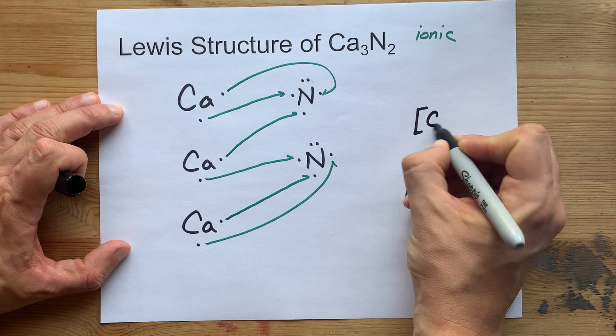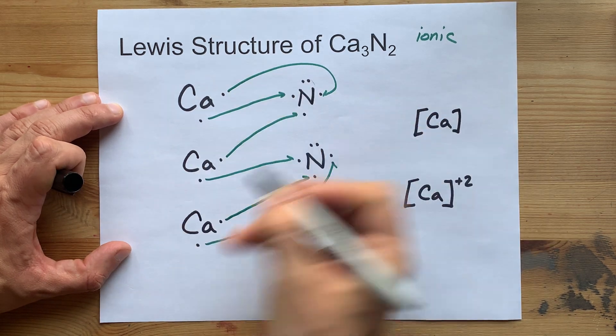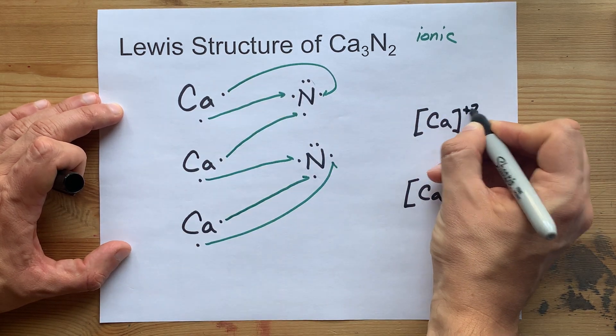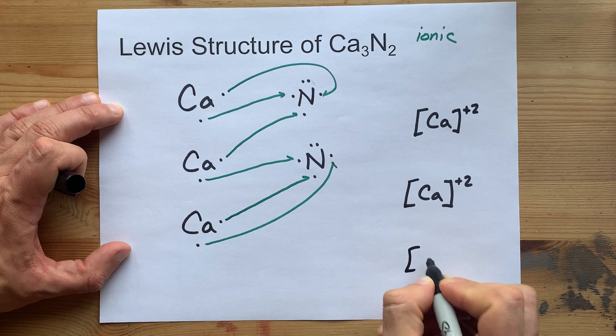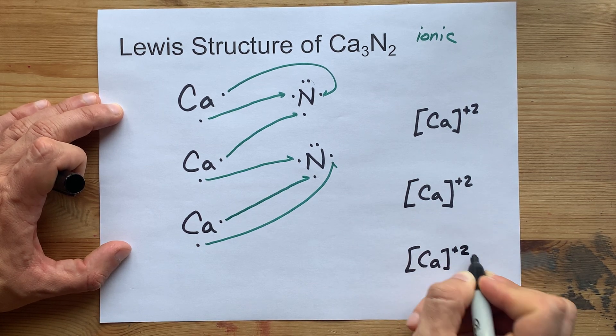And you're going to need three of them because you needed three of them to make all the electrons balance. So, I'm just going to draw it three times here. There you go.